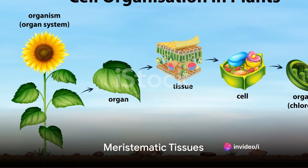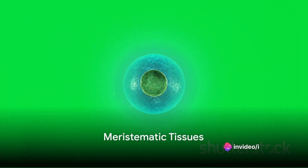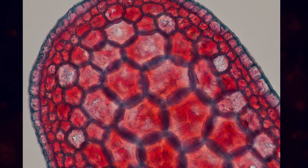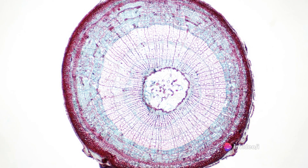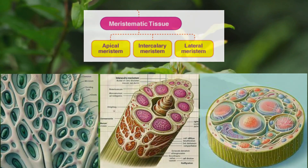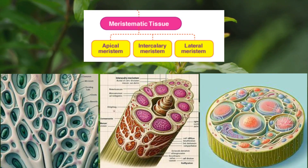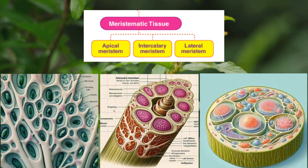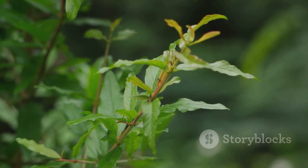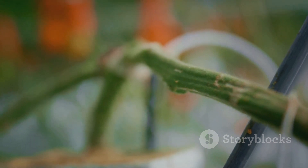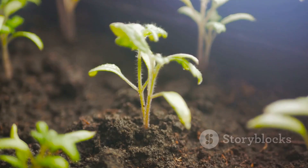Meristematic tissues are the building blocks of the plant world. Think of them as the plant's growth factories. They are responsible for producing new cells that enable the plant to grow. These tissues are further divided into three types: apical meristem, intercalary meristem and lateral meristem.